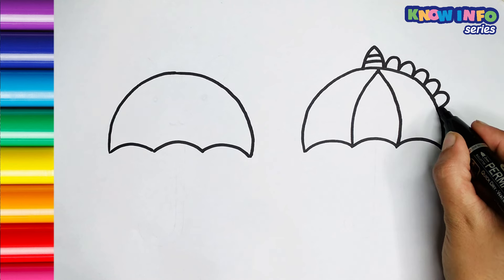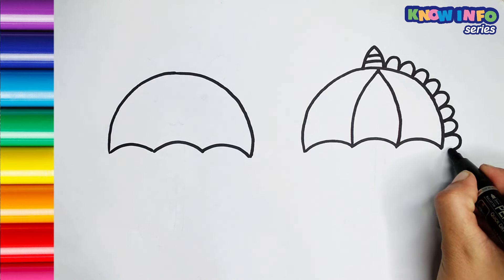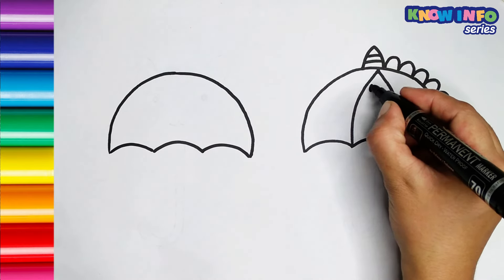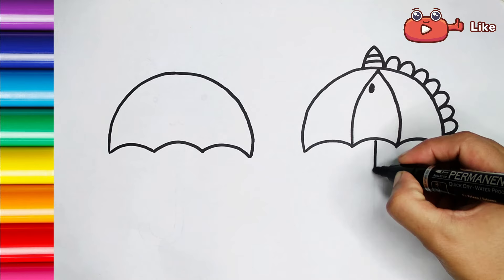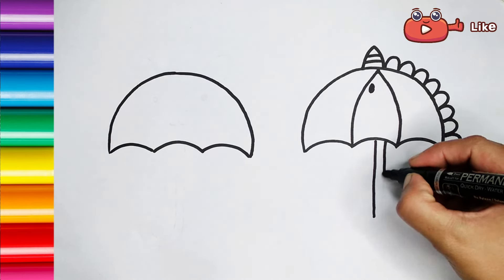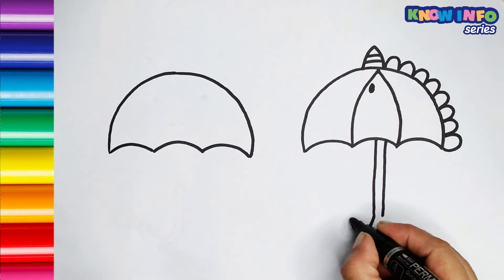Oh, it looks like a dinosaur! Draw a vertical straight line beneath the canopy to create the handle of the umbrella. Add a small oval at the end of the handle to complete the look of the handle.